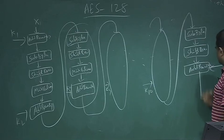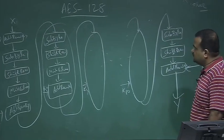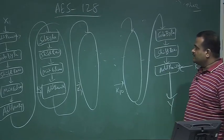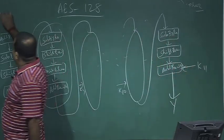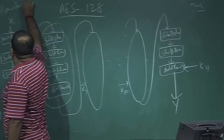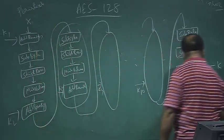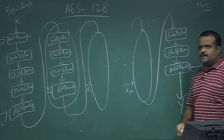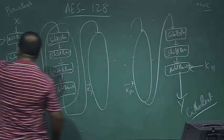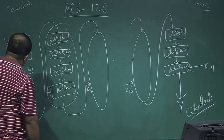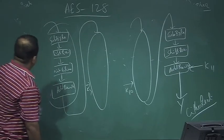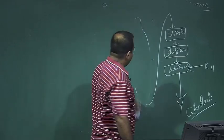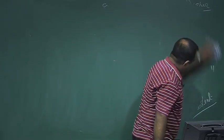The output of the last round is the ciphertext y. So for AES-128, we have a 128-bit plaintext input and a 128-bit ciphertext output. We will now discuss what each of these operations actually does and how the key scheduling algorithm produces the round keys.